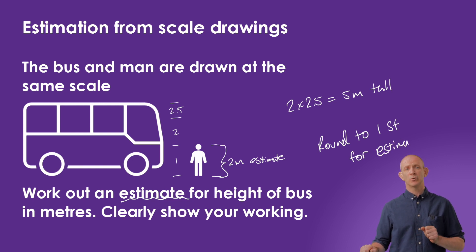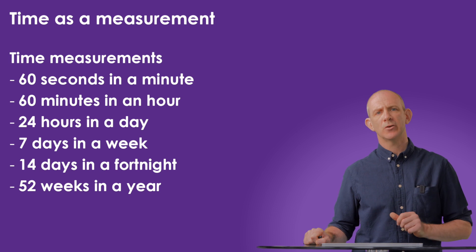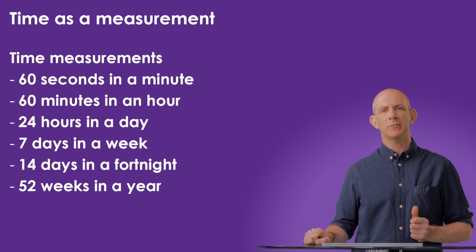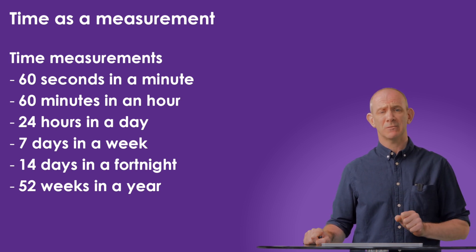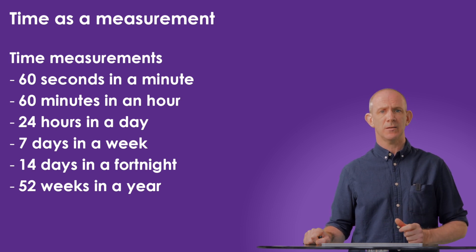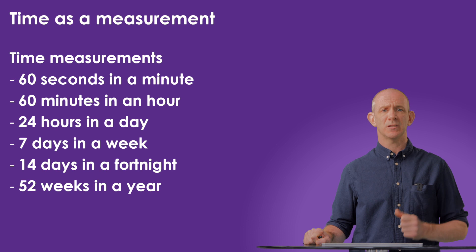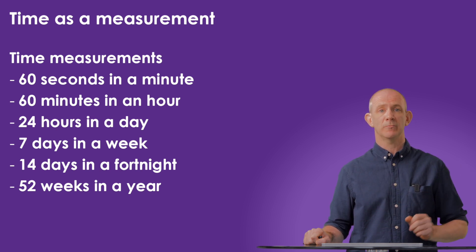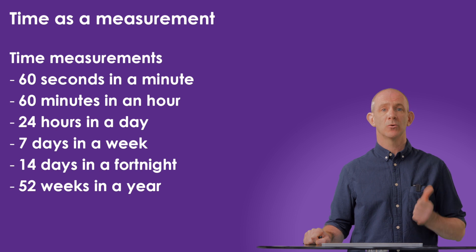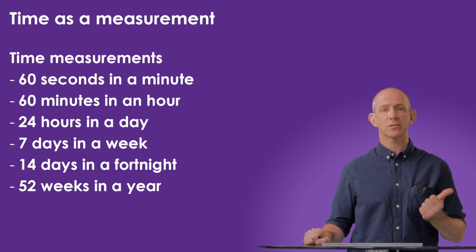Estimation is a mathematical process that allows for a visual idea of size when describing objects. Unlike metric units, which have a simple conversion process, time uses many differing units and multipliers. There are 60 seconds in a minute, 60 minutes in an hour, 24 hours in a day, 7 days in a week, 14 days in a fortnight, and 52 weeks in a year. To convert between these units, you must determine whether you're going from a smaller unit to a larger one, to decide whether to multiply or divide.